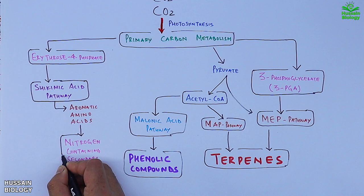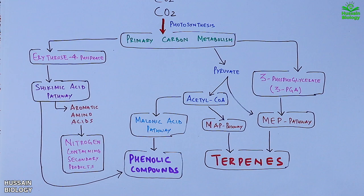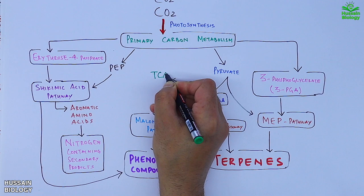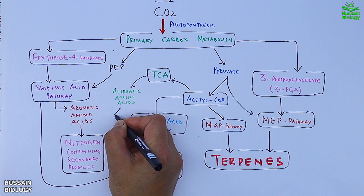On the other hand, we also see PEP, that's phosphoenolpyruvate, also leads into the shikimic pathway. And if we get to acetyl-CoA, it drives into tricarboxylic acid cycle which synthesizes aliphatic amino acids that produces nitrogen-containing compounds also. So this is the generalized outlook of secondary metabolites and its metabolism.